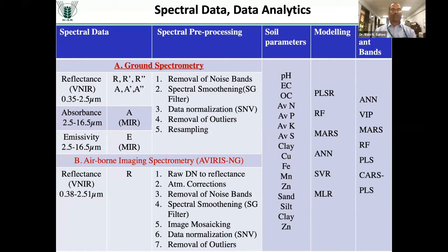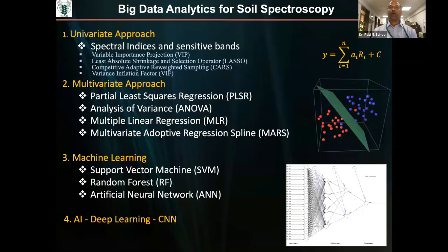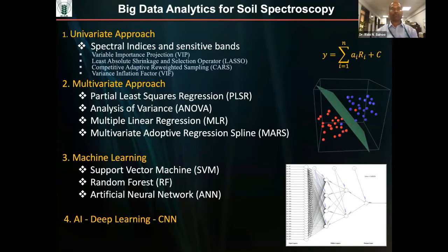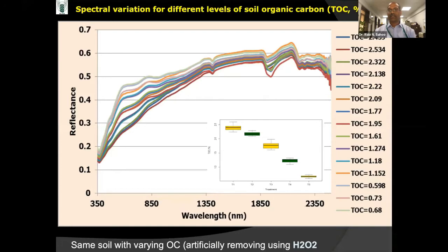You have ground spectrometers from VNR to MIR — either absorbance, emissivity, or reflectance — or airborne imaging spectrometers with reflectance from 0.38 to 2.51 micrometers. These are fed into different spectral pre-processing approaches and multivariate modeling to characterize the spectra and retrieve soil parameters. As we don't have indices for soil spectral imprint, we can do data mining for sensitive spectral bands using different approaches. Multivariate approaches including PLSR are most commonly used, and recently machine learning and deep learning have offered great advantages for this.